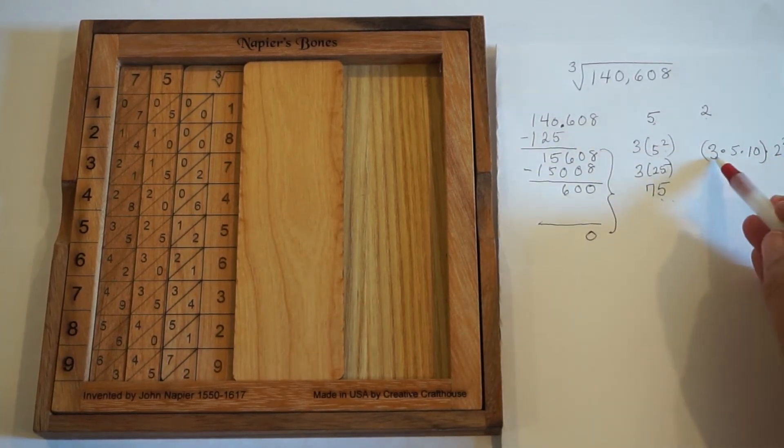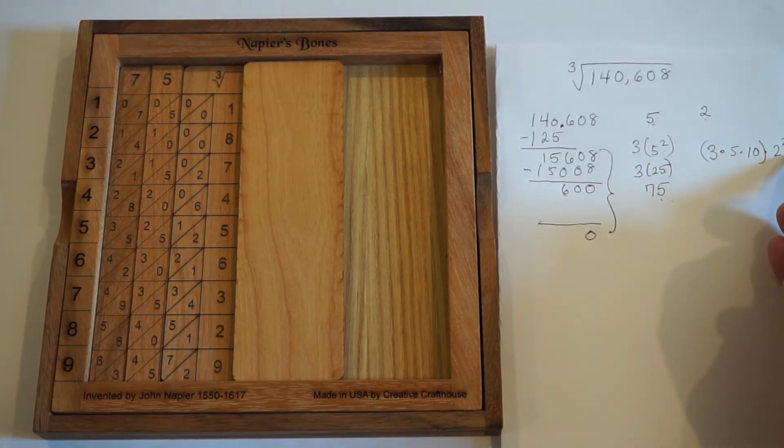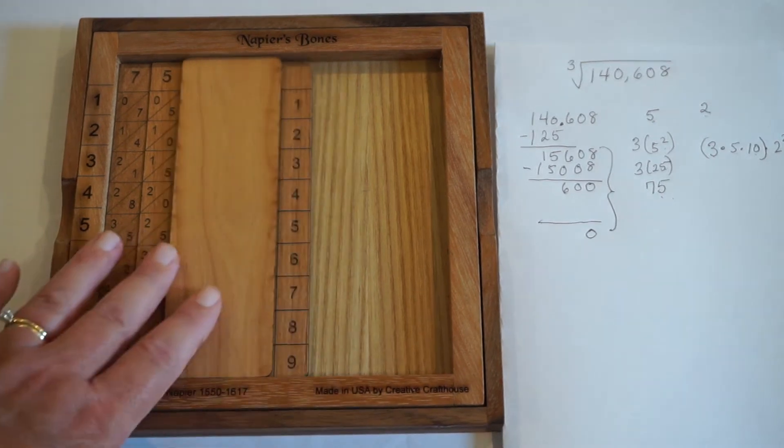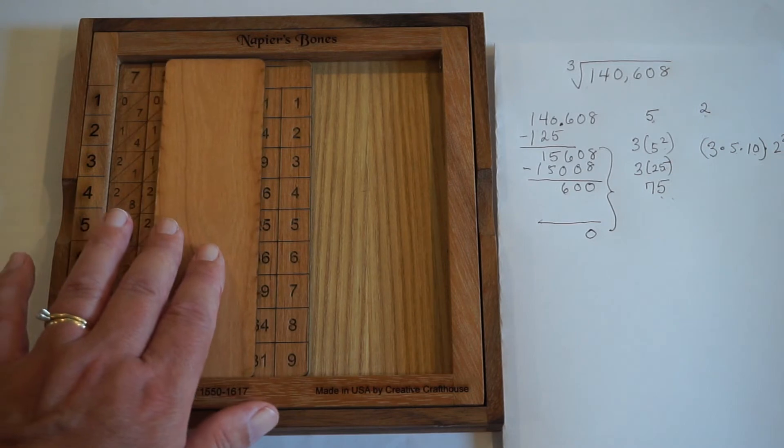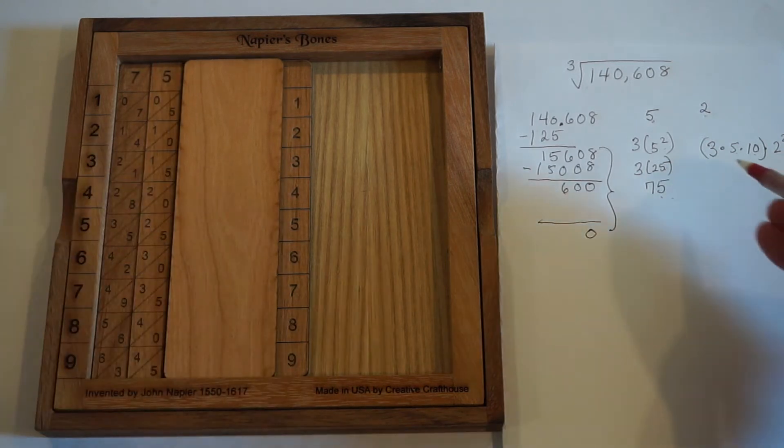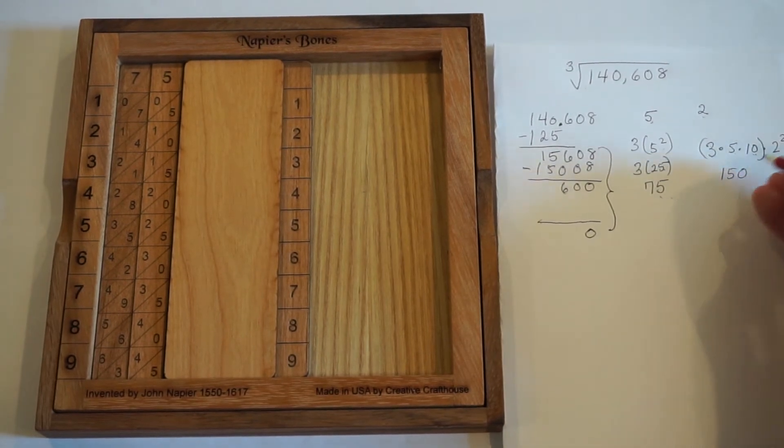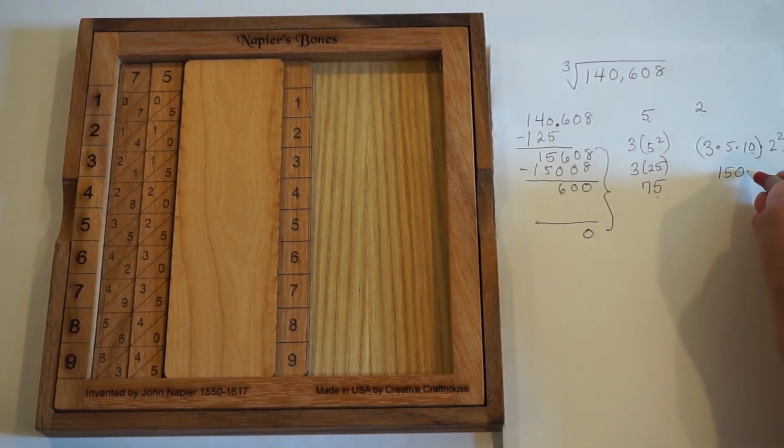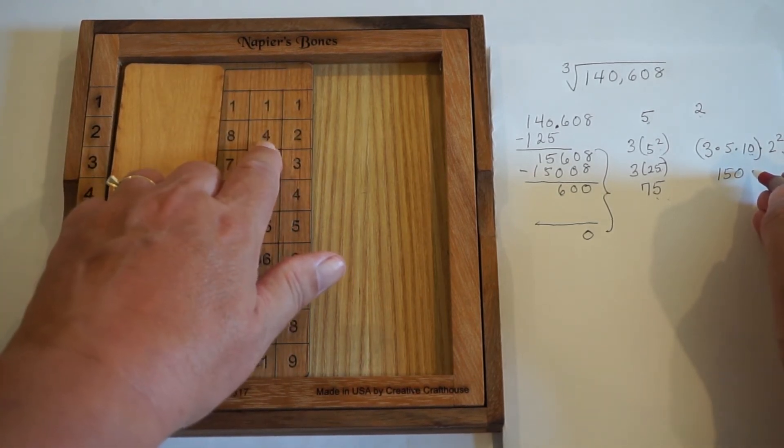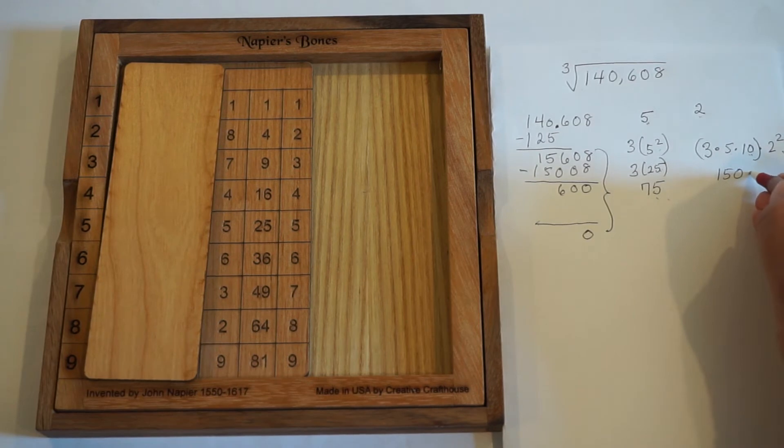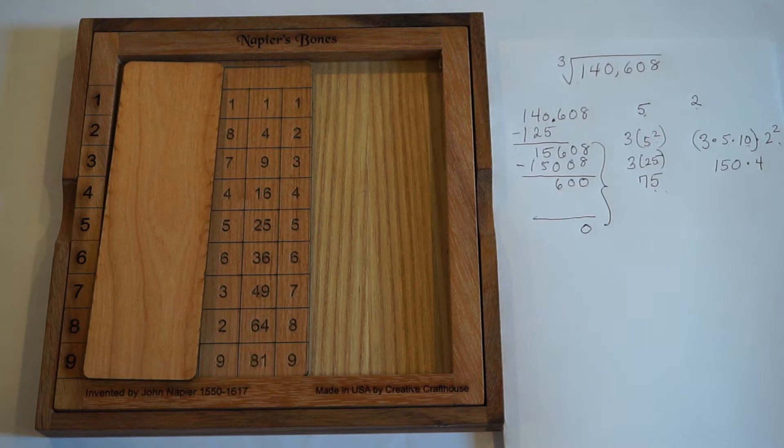So we're going to do 3 times 5 times 10 times our next number squared. And again, you can use the back part of this cube root rod if you need help with squaring or with multiplication. 3 times 5 is 15 times 10 is 150. And 2 squared is 4. Again, if we need to check into that, we can see that that's the case right here. And so we need to multiply 150 by 4.